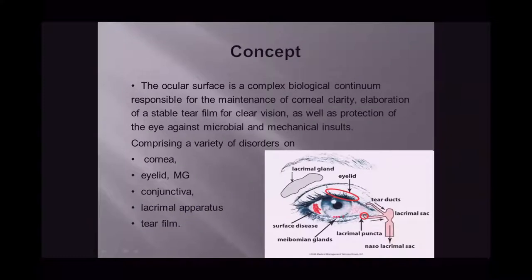The ocular surface is a specific complex biological continuum responsible for maintenance of corneal clarity, elaboration of a stable tear film for clear vision, and protection of the eye against microbial and mechanical insults. Disorders comprising the cornea, eyelid, meibomian gland, conjunctiva, lacrimal apparatus, and tear film can all lead to this disease.